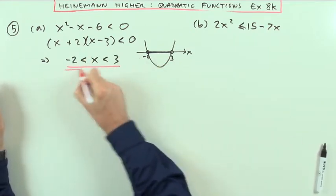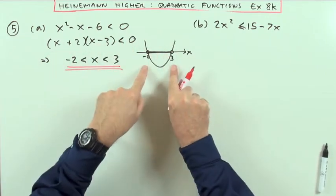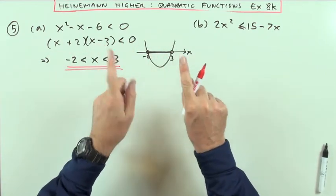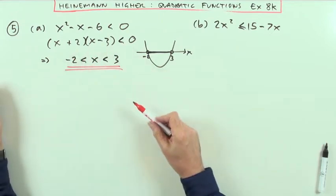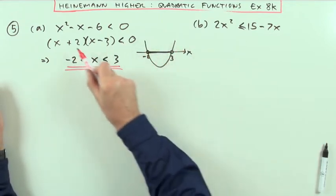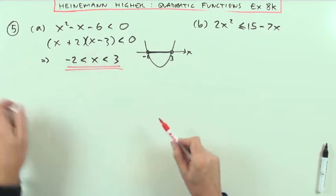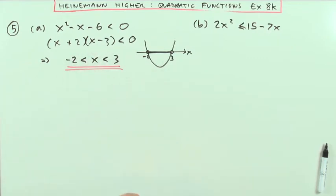Same steps. Factorise it to get the zeros, or to get the roots rather, but don't just try and form separate inequations. Consider the graph, the picture of the answer you get from this product to get the interval in the solution.